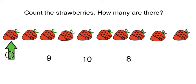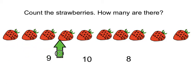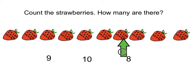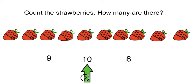How many strawberries are there? Ready? 1, 2, 3, 4, 5, 6, 7, 8, 9, 10. There are 10 strawberries.